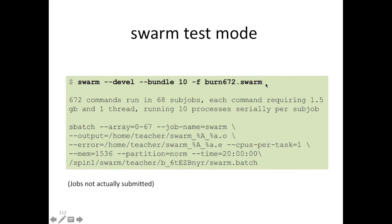What this command produces is output telling you what it would do if it was submitted as a swarm. It'll have 672 commands, it'll create 68 subjobs, each command will allocate 1.5 gigabytes and one thread. Those are the defaults because you did not specify a -t or -g flag.